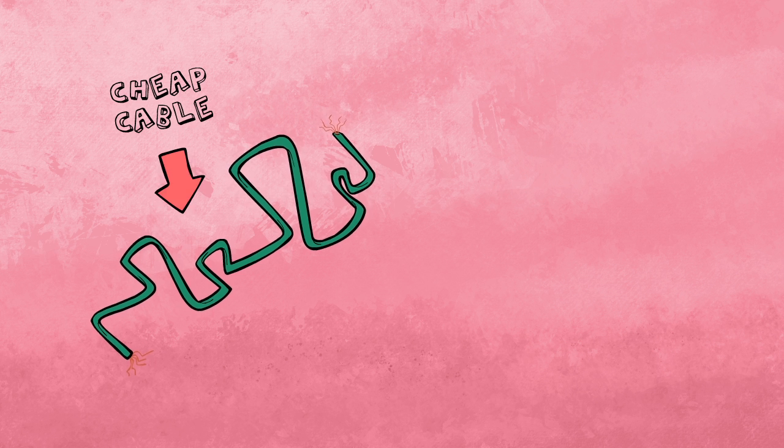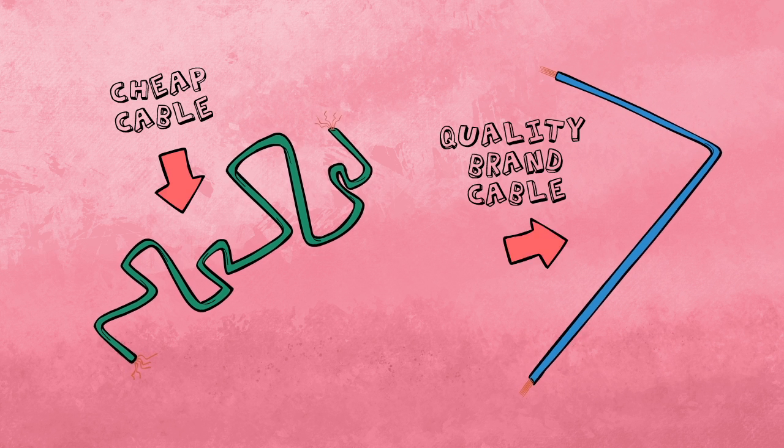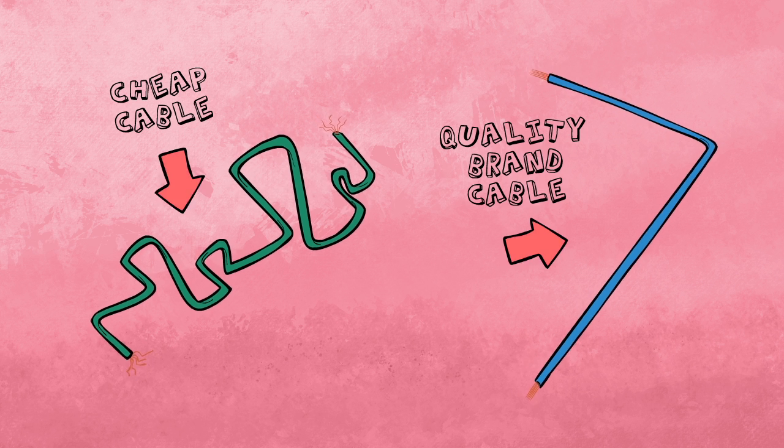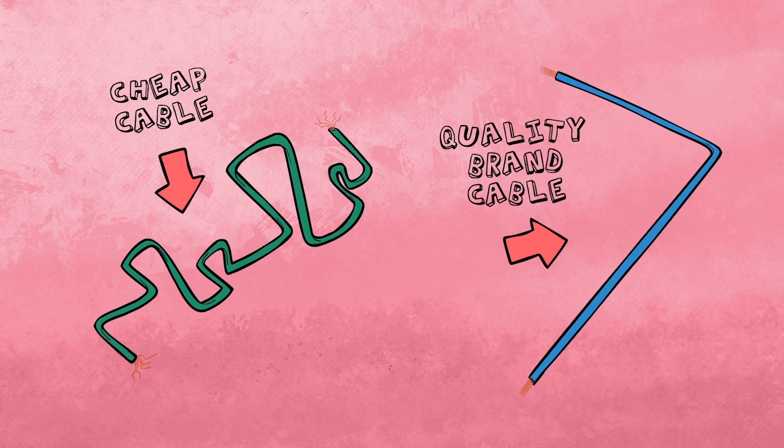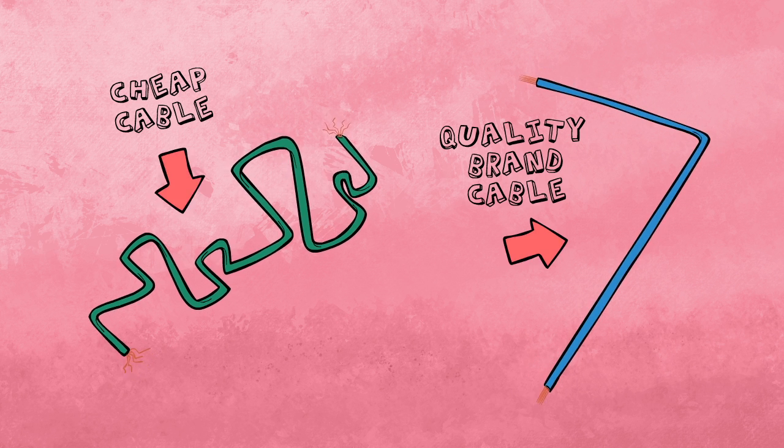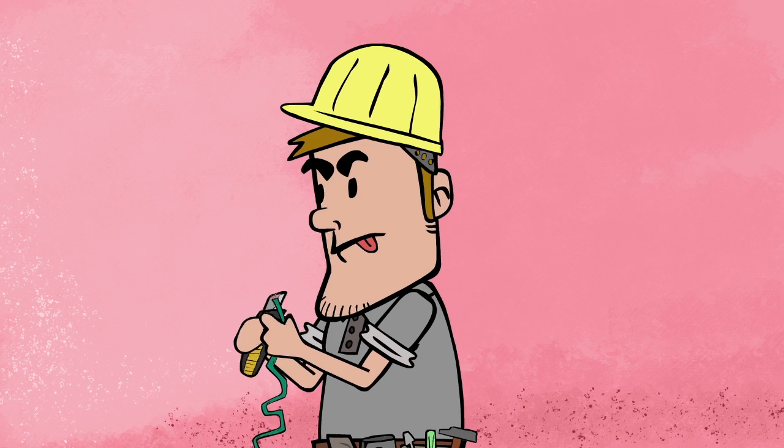What Rob failed to realize is that the cables were cheaper because they did not comply with Australian standards. The quality and innovation of the product was lacking, and the cables were less flexible, harder to strip, and ultimately, less safe.